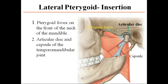The lateral pterygoid inserts into the pterygoid fovea on the front of the neck of the mandible, and also gains attachment to the articular disc and the capsule of the temporomandibular joint. The articular disc is essentially an extension of the lateral pterygoid muscle.